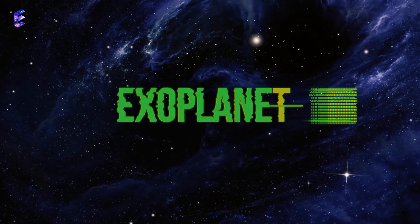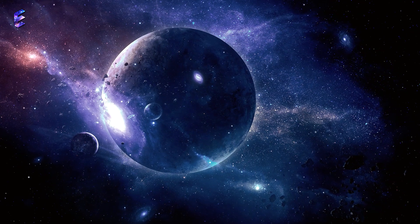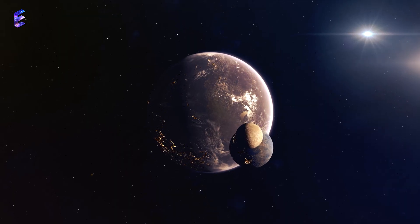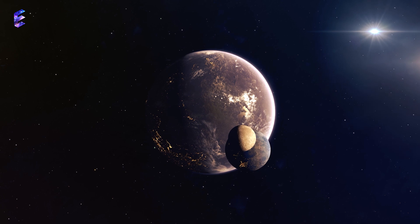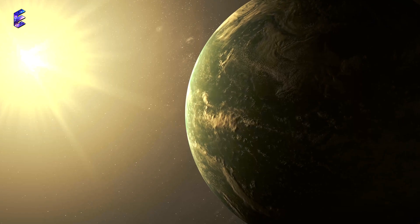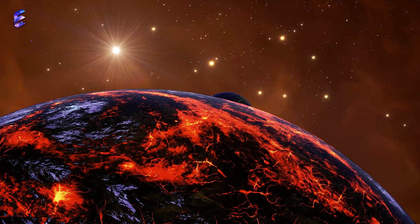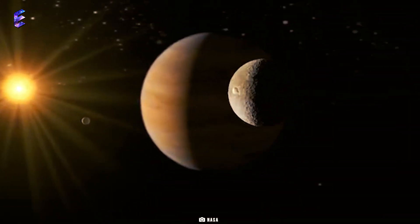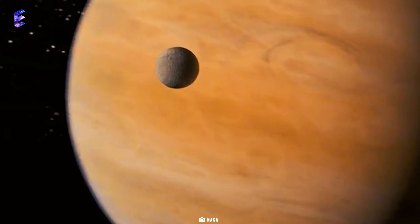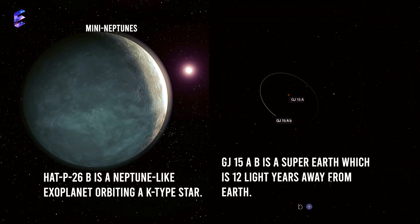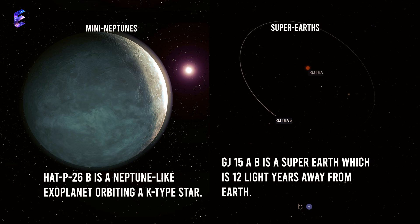First off, we have exoplanets. This is the term given to planets located outside our solar system. These planets orbit a star just like how Earth orbits the sun. From rocky planets to gas giants, the special thing about exoplanets is the fact that they are diverse in nature. There are Jupiter-like large gas giants called hot Jupiters that remain very close to their host star. The mini Neptunes and super Earths are the most common type of exoplanets.